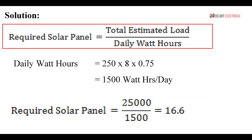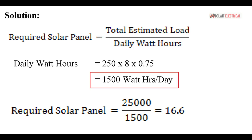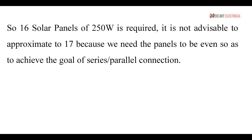Using our formula, Required Solar Panels = Approximate Total Load ÷ Daily Watt Hours. Daily Watt Hours = 250 watts × 8 hours × 0.75 efficiency = 1,500 watt-hours per day. Therefore, Required Solar Panels = 25,000 ÷ 1,500 = 16.6.